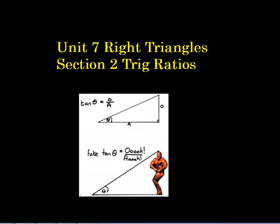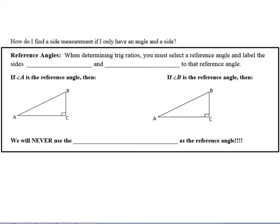Hey, it's Mr. Loneski with Unit 7, Section 2. We're talking about trig ratios today. So what do we use trig ratios for? If we're given a right triangle and we only have an angle and a side, we can use trig ratios to help us find other missing sides. In other words, we can't really use the Pythagorean theorem — we need to use some other means to find these angles or sides.